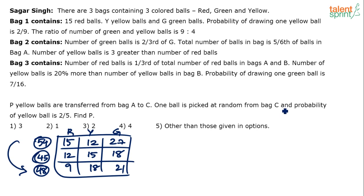For question two: P yellow balls are transferred from bag A to bag C. After the transfer, bag C's yellow ball count becomes P + 18, and the total balls in bag C becomes 48 + P. One ball is then picked at random from bag C, and the probability of it being yellow is 2 by 5. We need to find P.